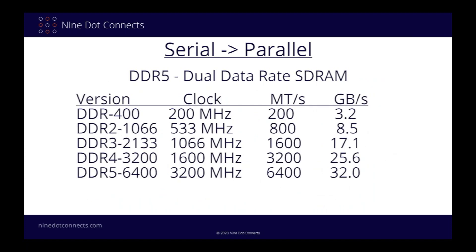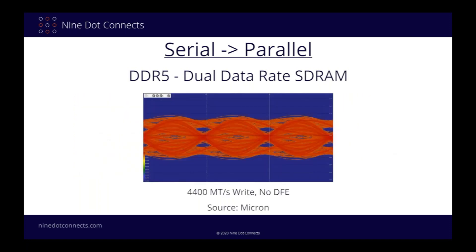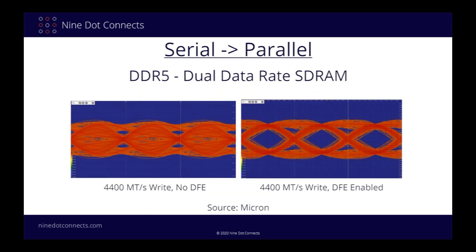Going back to DDR5, the standard clock speed is 3.2 GHz, and there is even talk of being able to go up to 8.4 GHz someday. So at these speeds, even the parallel bus signals start to exhibit the same problems as high-speed serial links — overshoot and noise closing the height of the eye, and jitter causing edge overlap and narrowing the bathtub. Here is an actual measurement from Micron Technologies showing the closed eye at the pin of a device running at 4,400 megatransfers per second. In order to overcome these issues, the DDR5 standard incorporates the same digital signal processing method that is used in high-speed serial links — decision feedback equalization. And the side-by-side measurements show the eye has opened up quite a bit with DFE enabled, and this will most likely pass certification.